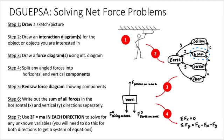We're going to solve a series of example problems, and I'd like to remind everyone of the DEGEPSA problem solving process before we do. Step one, always draw a sketch or picture. Step two, draw your interaction diagram, and step three, draw your force diagram for the object you are interested in. Step four, split any angled forces into horizontal and vertical components and redraw your force diagram showing these components if applicable. We'll then write out the sum of all forces in the horizontal and vertical directions separately, and use Newton's second law in each direction to solve for any unknown variables.